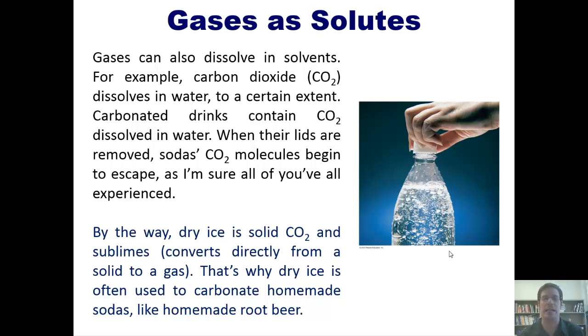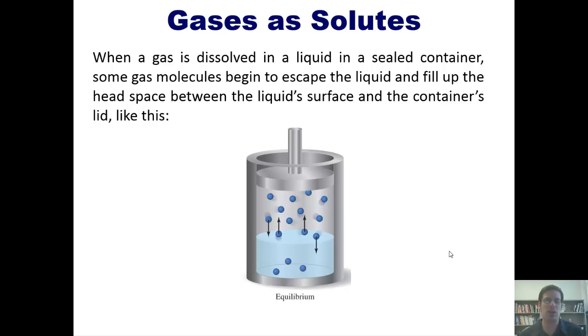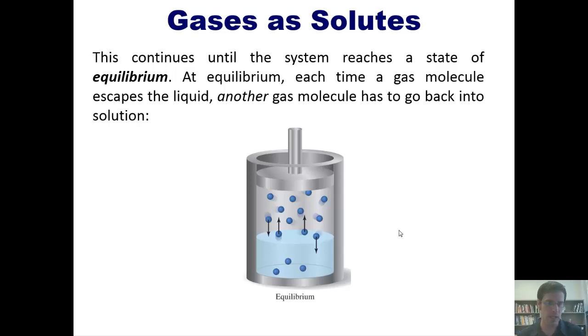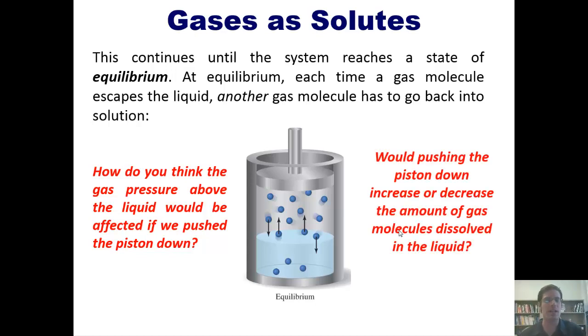So when a gas is dissolved in a liquid with a sealed container, some gas molecules begin to escape the liquid and fill up the headspace, this empty space that's between the surface of the liquid and the container's lid. This process continues until the system reaches a state of equilibrium. Once you reach equilibrium, every time a gas molecule escapes the liquid and goes up into the headspace above it, a corresponding gas molecule has to go from the headspace back down into the liquid. So it's a one-to-one exchange, molecule per molecule, once you're at equilibrium. So let me ask you, how do you think the gas pressure above the liquid would be affected if we pushed the piston down? Would the pressure go up or would it go down? And secondarily, would pushing the piston down increase or decrease the amount of gas molecules dissolved in the liquid?